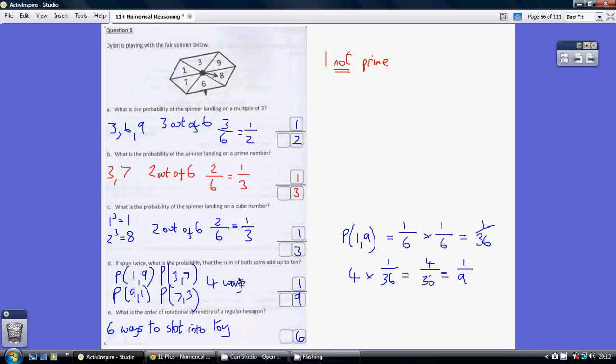But how many combinations are there in total if we spin this 6 sided spinner twice? Well let's just pick any old one at random, let's imagine the chances of a 1 and then a 9. The chances of spinning a 1 is a 6th, and then a 9 is another 6th. Top times top, bottom times bottom is a 36th. So the chances of spinning any combination is 1 out of 36.